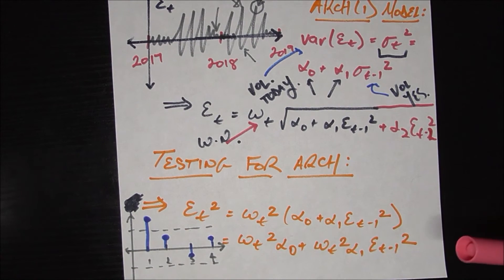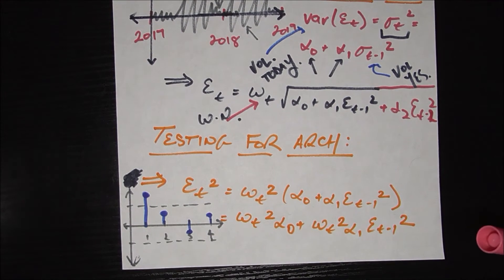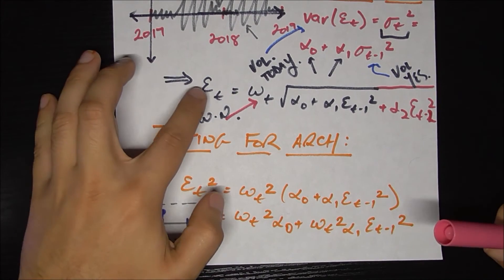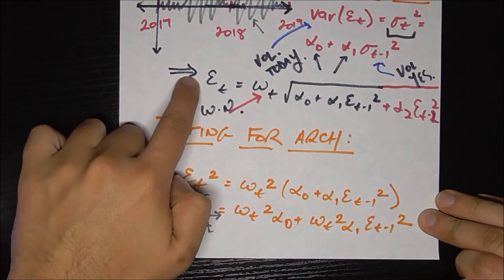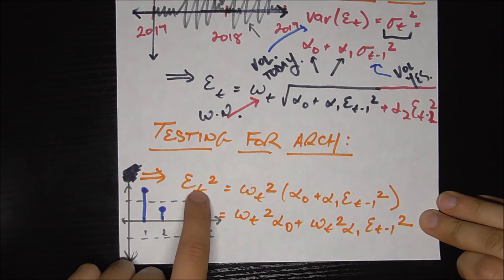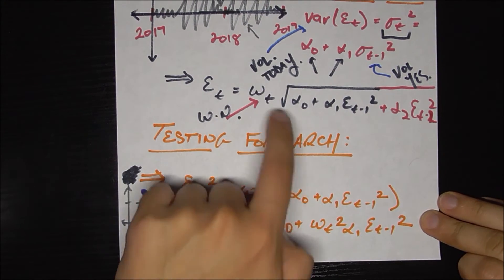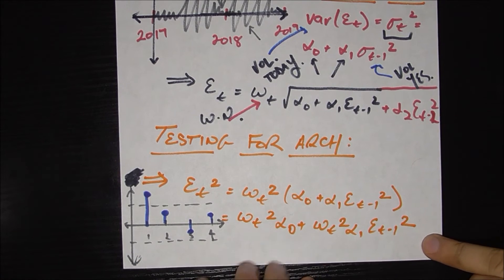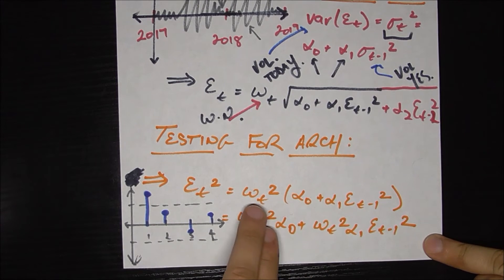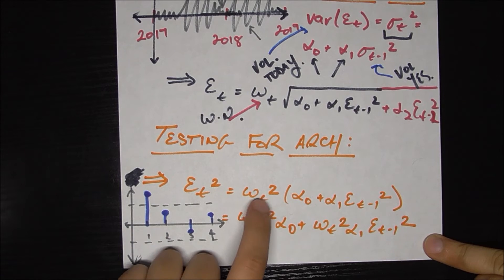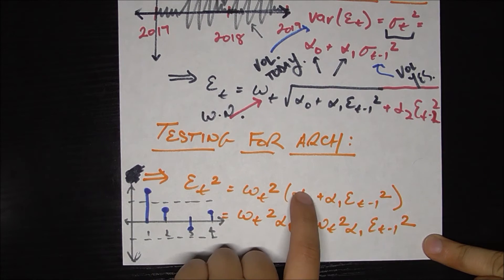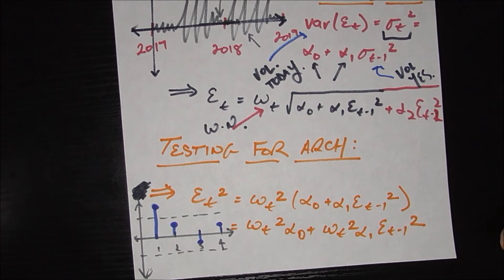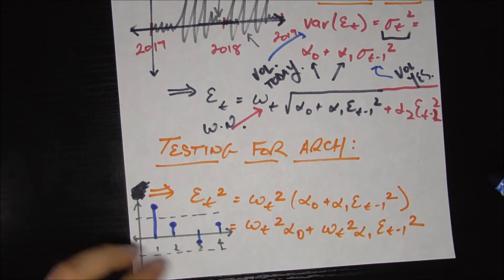Okay, so how do we test for an ARCH model? What we're going to go ahead and do is we're going to substitute epsilon t squared is equal to basically what I'm doing is taking this and squaring it both sides. So I'm going to get epsilon sub t squared, white noise gets squared, and the inside square root gets eliminated. And again, we're back to ARCH(1) here. And of course, if I take the w sub t squared and I apply it to both these terms, just expanding, then I get this.